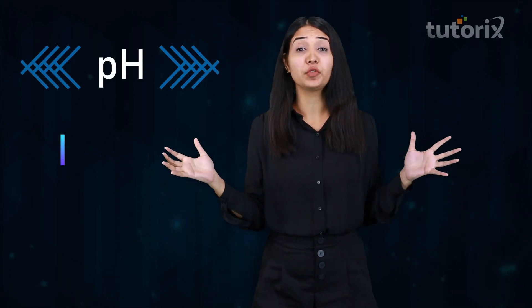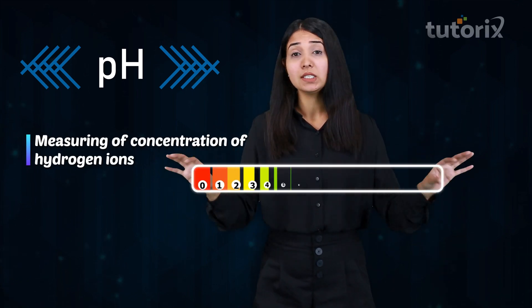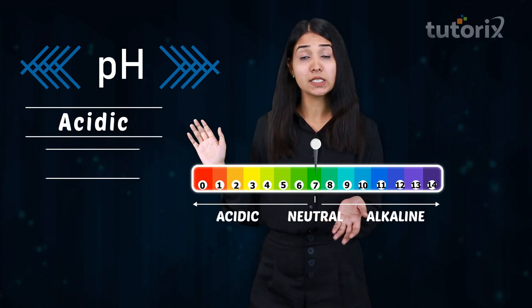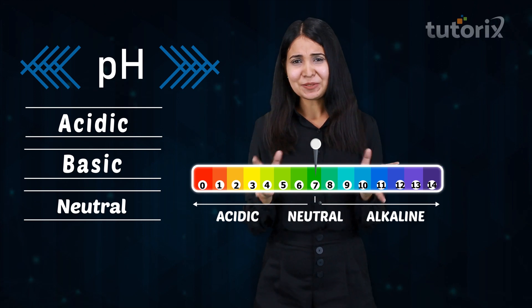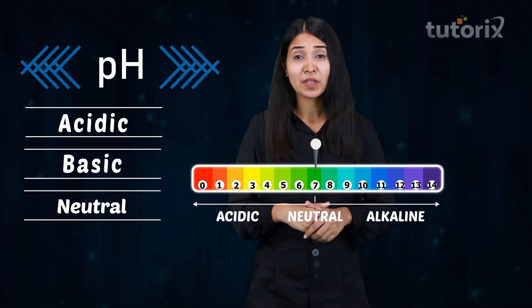We have established the concept of pH, which is the concentration of hydrogen ions. On the basis of this pH scale we can classify objects as acidic, basic, or neutral. pH has a significant role in our daily life, and that's why there are many industrial and biological processes which are affected by the pH value.